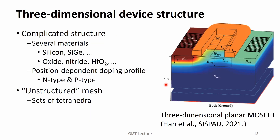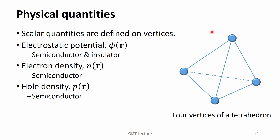Usually, a three-dimensional device structure is quite complicated. In this slide, a planar MOSFET is shown. Even in this case the three-dimensional structure is not trivial — it has several materials and the doping profile rapidly changes. In order to describe such a complicated structure, the semiconductor device simulator adopts the unstructured mesh. In the unstructured mesh, sets of tetrahedra are introduced to describe various three-dimensional shapes. Each tetrahedron has four vertices, and scalar quantities are defined on those vertices.